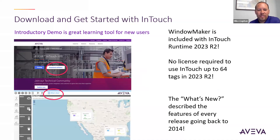These days you can actually download InTouch for free directly from the Aviva website. If you do a Google search for Aviva InTouch, you can go to the InTouch homepage and you'll see a link for download software. There's also a link for pricing where you can see some of the pricing we're going to share today.